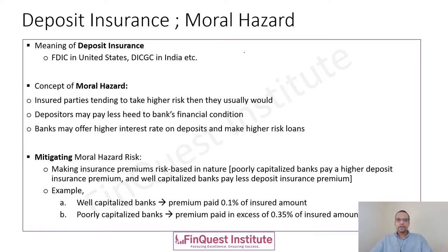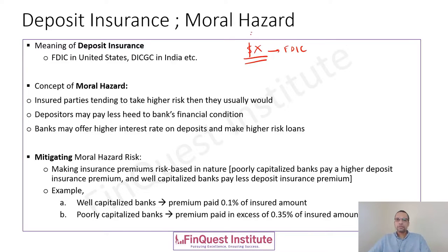Let's say FDIC is providing insurance against X dollars for customers' money parked as part of their savings with the bank. If there is a run on the bank or if the bank runs into problems and is unable to repay this X dollars, then anything up to X dollars will be met by FDIC. Imagine X dollars is the amount FDIC guarantees and the customer has parked Y dollars, where Y is greater than X. Keeping it generic makes it easy to understand and applicable for different numbers.